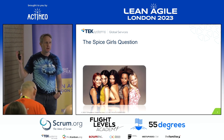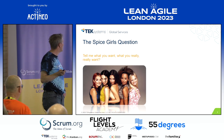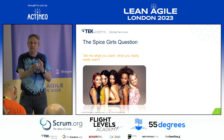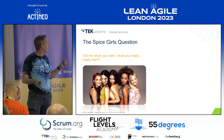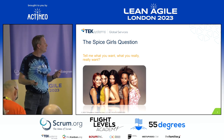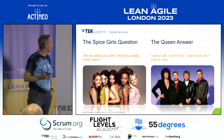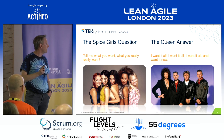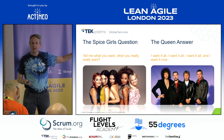Everybody know the Spice Girls question? Tell me what you want, what you really really want. This is the idea of focusing and prioritising — you can't have everything. But I quite often find that people give what I call the Queen answer: I want it all, I want it all, I want it all and I want it now. So how do we help people answer the Spice Girls question with the Queen answer? With fidelity.